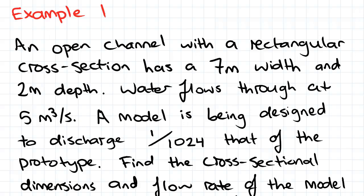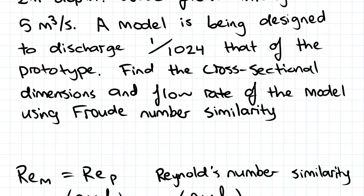A model is being designed to discharge 1/1024 of that of the prototype. Find the cross-sectional dimensions and flow rate of the model using the Froude number similarity.